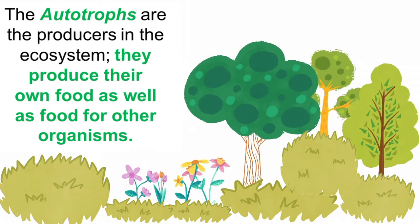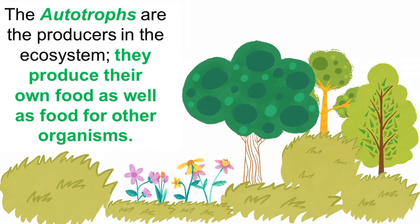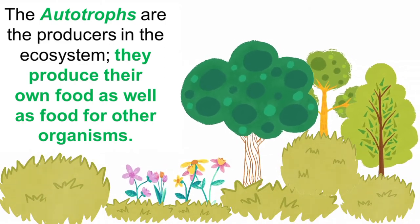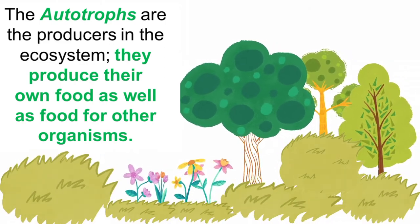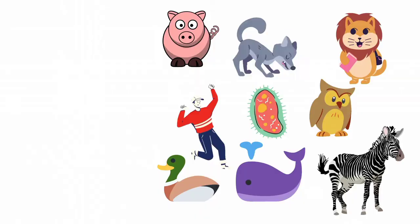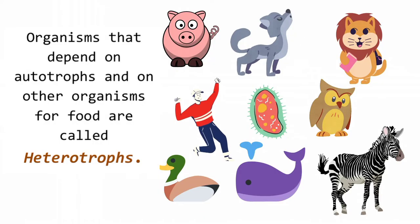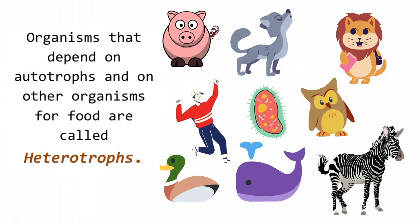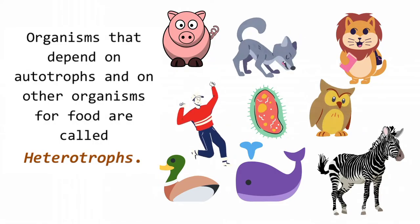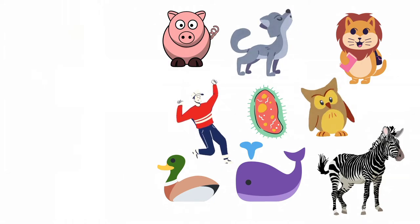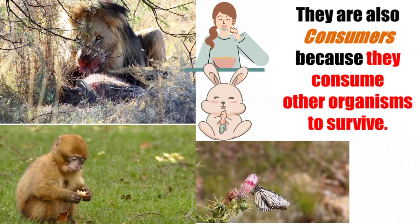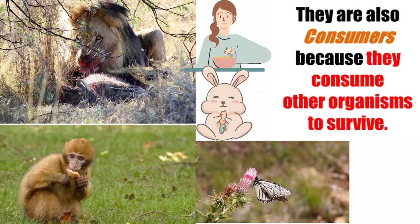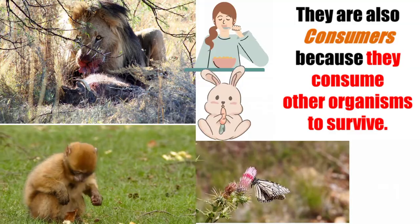The autotrophs are the producers in the ecosystem; they produce their own food as well as food for other organisms. Organisms that depend on autotrophs and on other organisms for food are called heterotrophs. They are also consumers because they consume other organisms to survive.